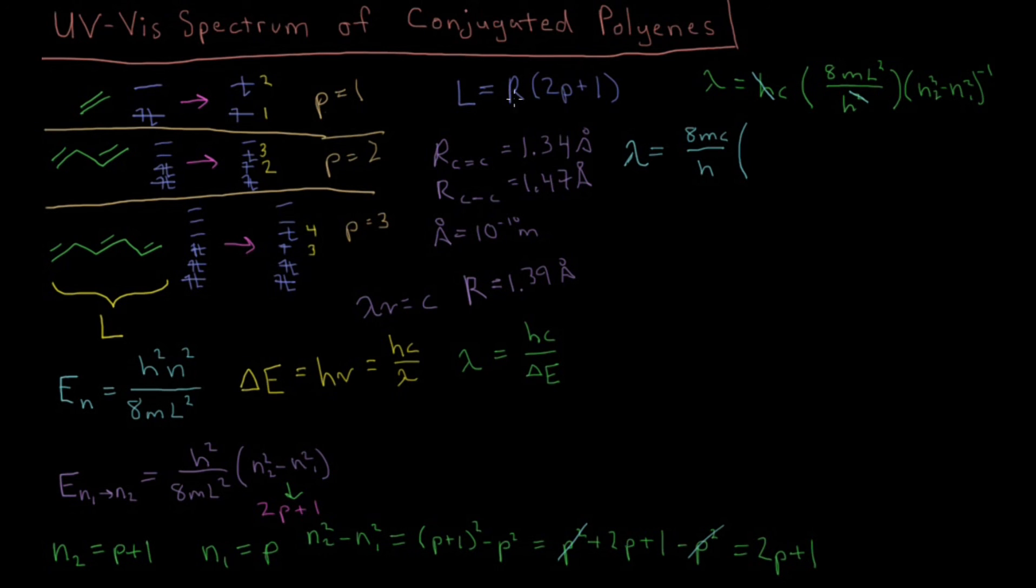Our next step is to say that lambda, the wavelength of absorption, is going to be 8mc over h. And now I'm going to substitute in the value of L here. So L is R times 2P plus 1, number of double bonds and length of that carbon-carbon bond. That's going to be squared, so R squared, 2P plus 1 squared, over n2 squared minus n1 squared, which we calculated and found that was 2P plus 1.